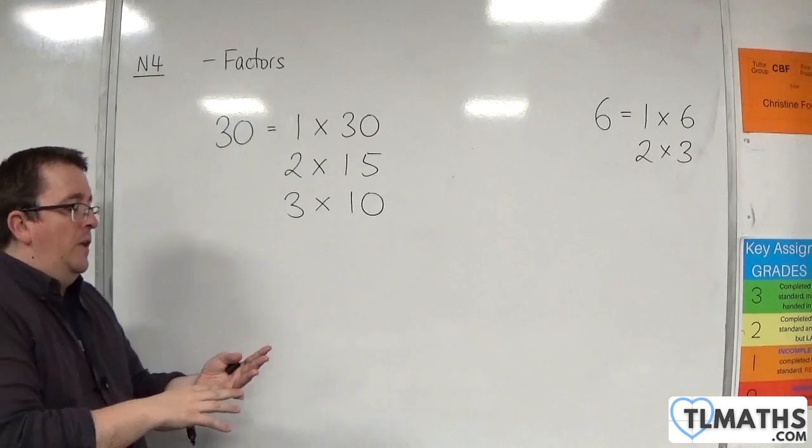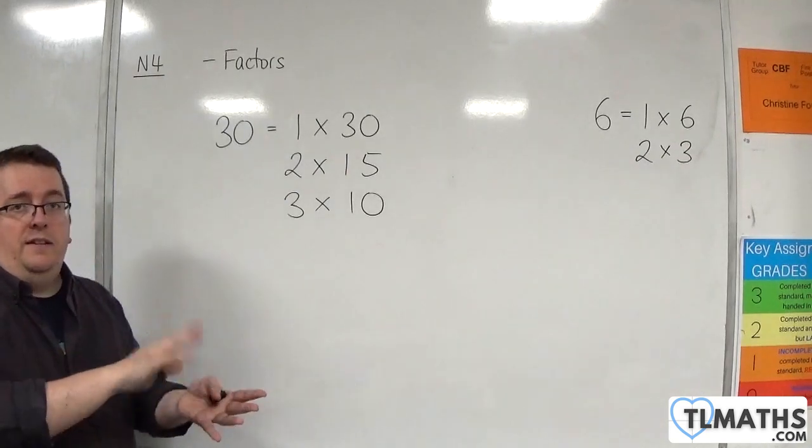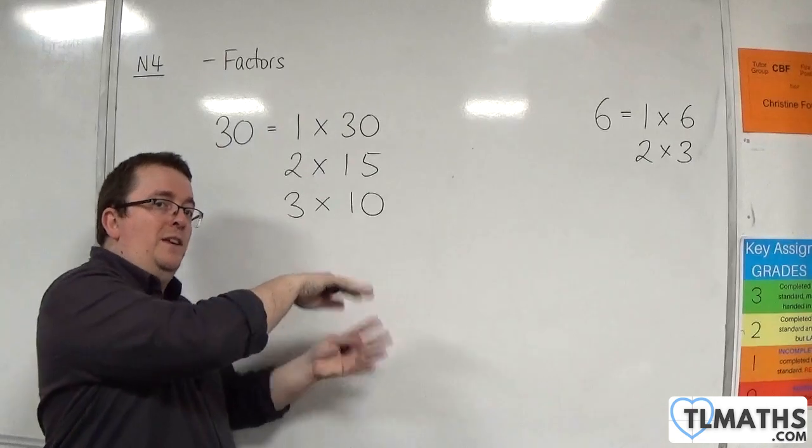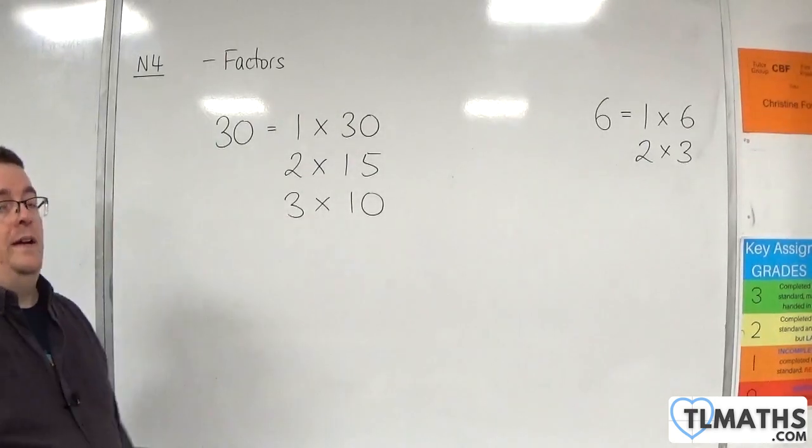So 16, 17, 18, 19, 20, 21, 22, 23, 24, 25, 26, 27, 28, 29, these are not factors of 30.